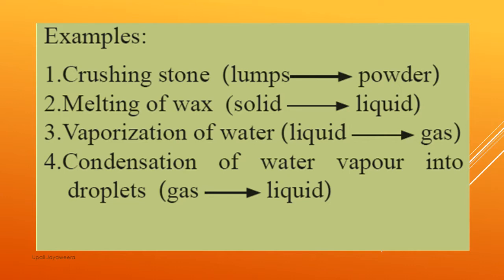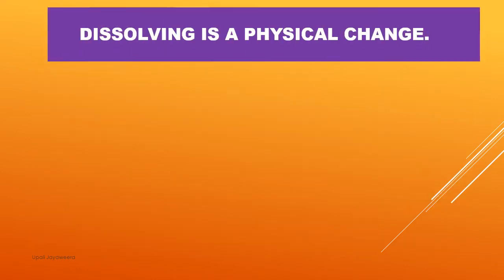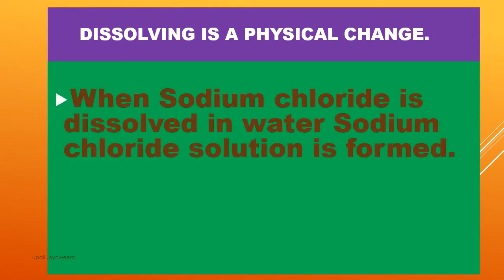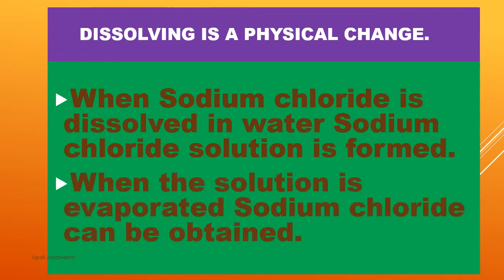Now we'll see some examples. Crushing stones — here lumps are converted into powder. Melting of wax — solid state is converted into liquid state. Vaporization of water — liquid converts into a gas. Condensation of water vapour into droplets — gas converts into a liquid. Dissolving is a physical change. When sodium chloride is dissolved in water, sodium chloride solution is formed. When the solution is evaporated, sodium chloride can be obtained.